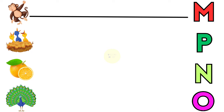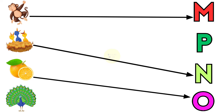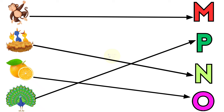M for monkey, N for nest, O for orange, P for peacock.